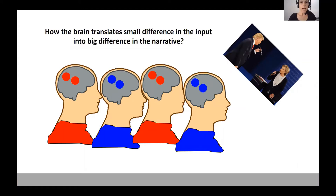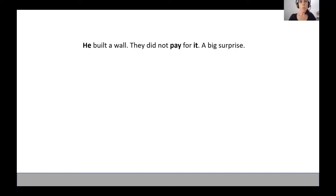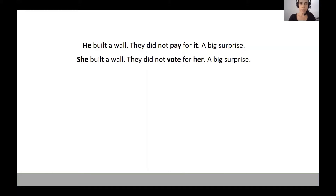In this project, we asked how the brain translates small differences in the input into big differences in the narrative. Small differences in the words we use can generate large differences in the meaning. For example — this is an example I gave during SFN 2016, a few days after Trump was elected — I can say: he built a wall, they did not pay for it, a big surprise. I can also say: she built a wall, they did not vote for her, a big surprise. By changing three out of 13 words, I changed the narrative from talking about Trump and his wish to build a wall on the border with Mexico, to a narrative about Hillary Clinton building a metaphorical wall between her and her voters.